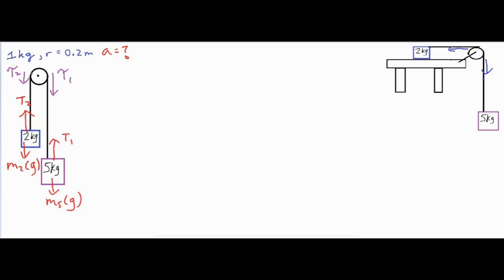We can safely assume that because the five kilogram mass is obviously heavier, it's going to win the battle of pulling the rope and making the whole system go around, having the pulley rotate clockwise. So torque one minus torque two equals the net torque on the disc. The first substitution we're going to make is replacing the net torque with I·α — the rotational inertia of the disc along with the angular acceleration.